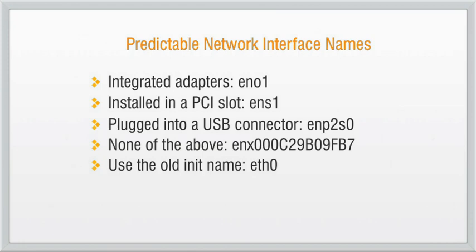One benefit of predictable network interface names is that specific aliases are permanently assigned to specific network interface cards — the same adapter always has the same alias. Aliases are defined based on several parameters in a specific order. First, if we're dealing with an onboard network adapter built into the motherboard, an index number provided by the system firmware — either UEFI or BIOS — is used to construct the alias. For example, 'en' indicates an Ethernet interface, and 'o1' indicates onboard device index number 1, giving the alias eno1.